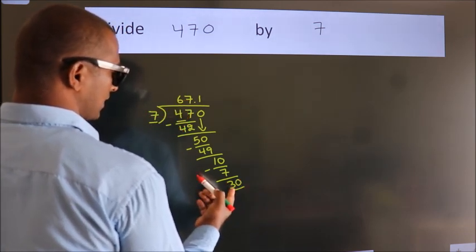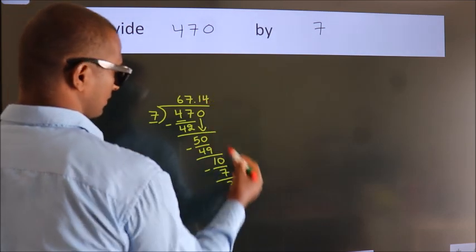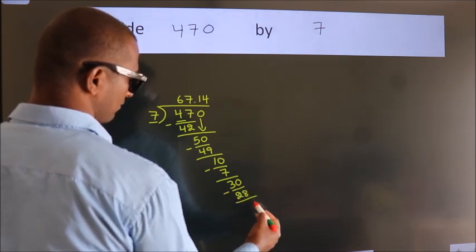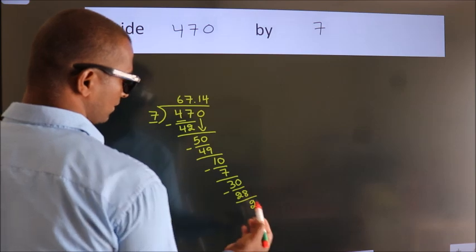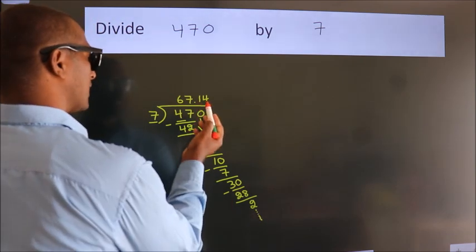A number close to 30 in the 7 table is 7 times 4, which is 28. Now we subtract. We get 2. And the division continues. It is enough if we do up to 2 decimal places.